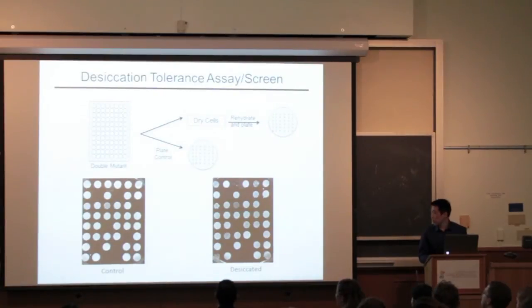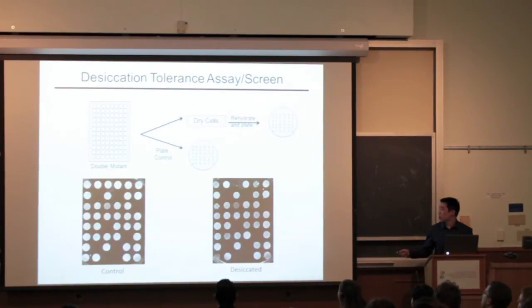This is an example of what a plate looks like. These white spots are all patches of yeast cells that grew up from the few cells that were there at the beginning. We can determine how alive these strains are by looking at how dense these patches are.